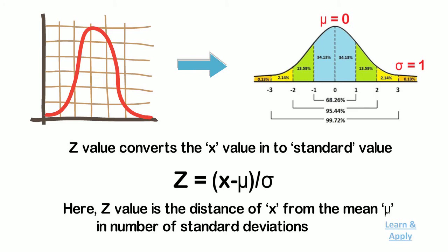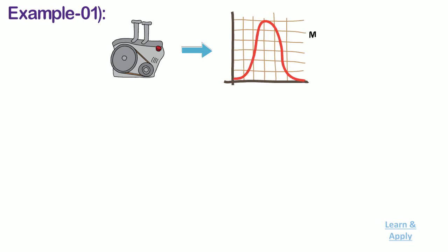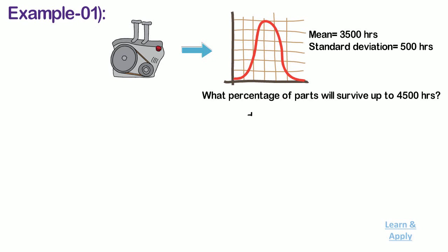Now let's see some examples to understand it in more detail. Example 1: A component exhibits normal distribution for failure rate with mean equal to 3500 hours and standard deviation of 500 hours. What percentage of parts will be survived up to 4500 hours? Here, mu equals 3500, sigma equals 500, and x equals 4500.